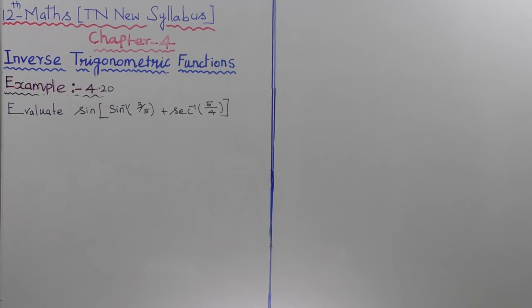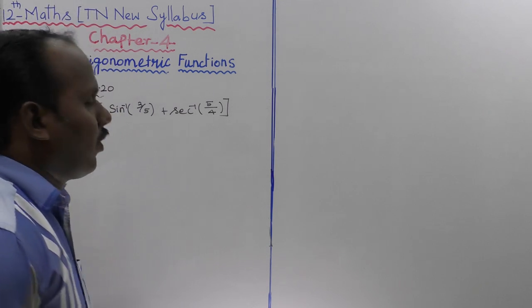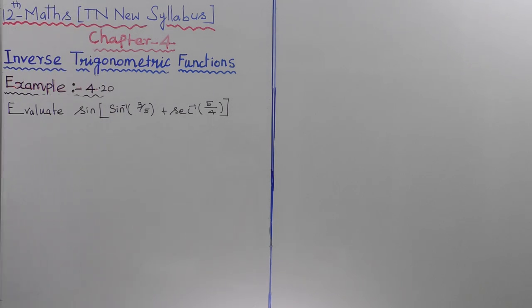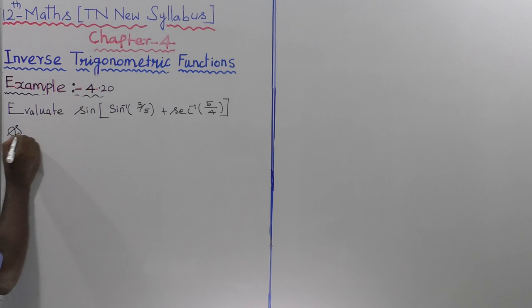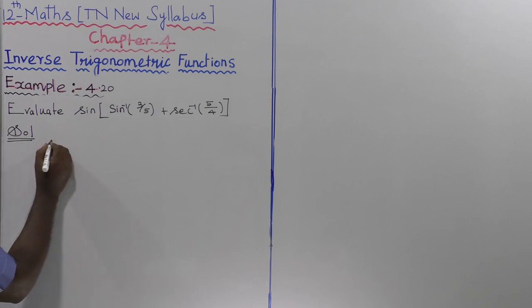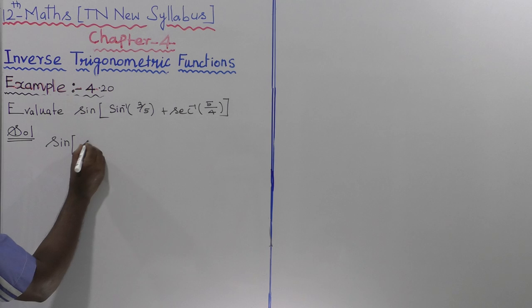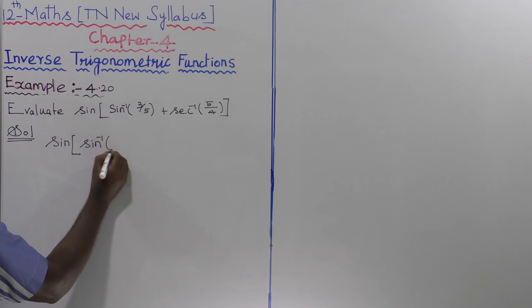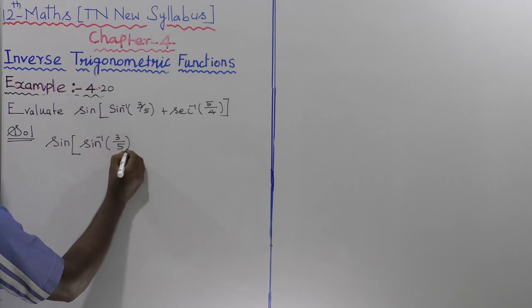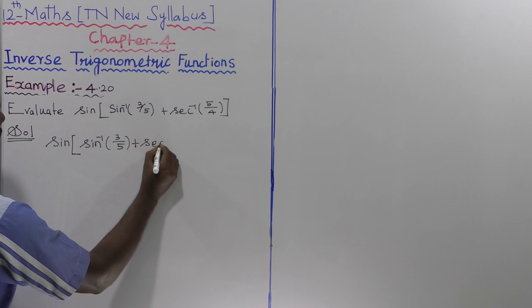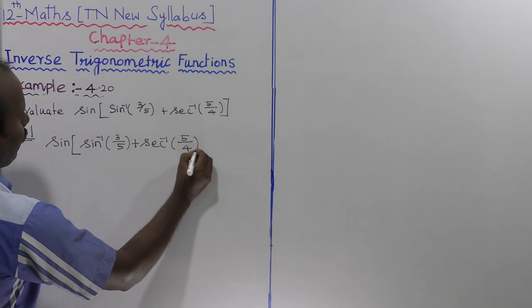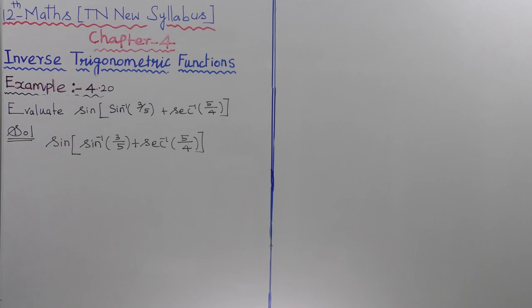Example 4.20: Evaluate sine inverse of 3 by 5 plus secant inverse of 5 by 4. So, solution: sine of sine inverse of 3 by 5 plus secant inverse of 5 by 4. First of all, evaluate this term.